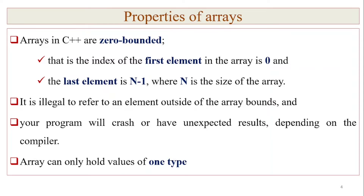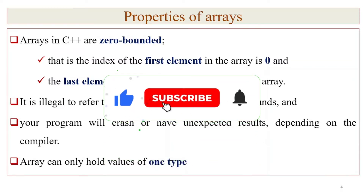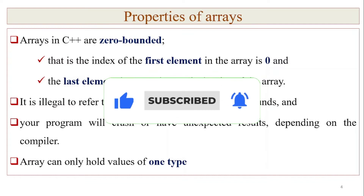Arrays in C++ are zero-bounded, meaning the index of the first element in the array is zero. The last element is at index n minus one. For example, if the array size is five, the last element is at index four and the first element is at index zero.